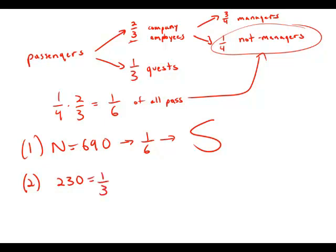So one-third of all the passengers would be 230. Well, that would allow us to figure out the number of passengers, which would allow us to figure out one-sixth of the number of passengers, which would allow us to figure out the number of employees who are not managers. So this statement is also sufficient.